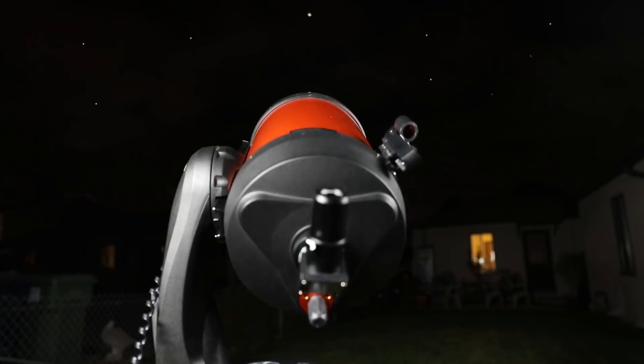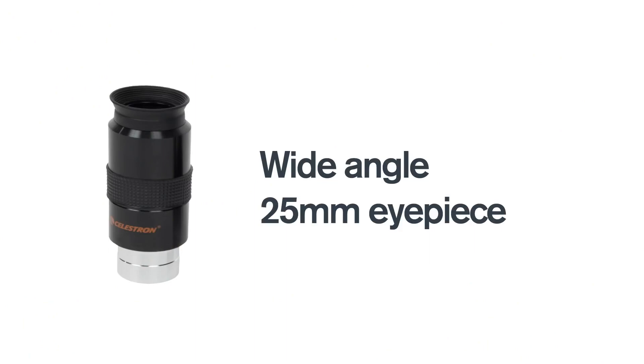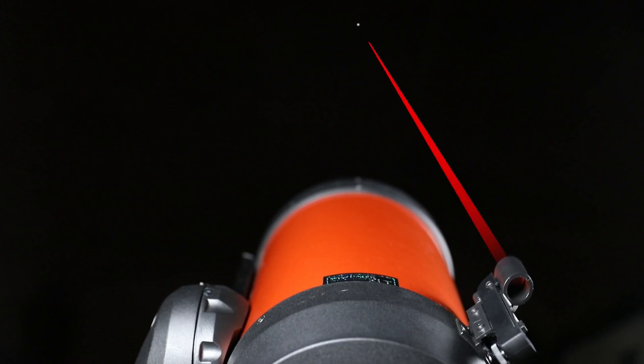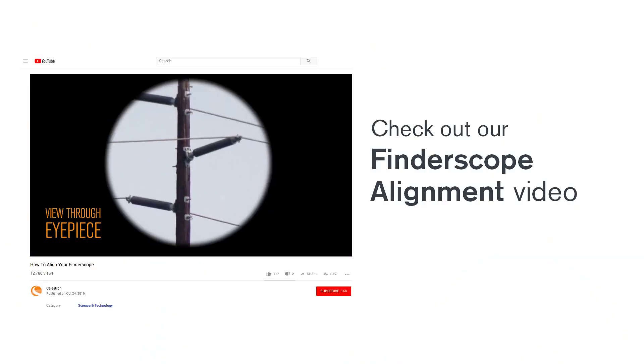Let's go through the SkyAlign process step by step. Before you begin, prepare your telescope with a wide-angled eyepiece. We recommend using the lowest magnification eyepiece that you have, ideally one with a focal length of 25mm or longer. Make sure your finder scope has been properly aligned with the optical tube. If you need instructions on how to do this, check out our finder scope alignment video linked in the description box below.